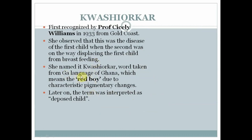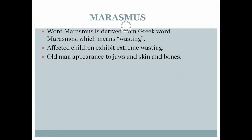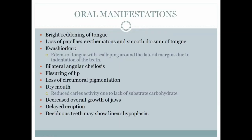Kwashiorkor is a word taken from the Twi language meaning 'red boy' due to characteristic pigmentary changes, later interpreted as 'deposed child.' It was first recognized by Professor Cecily Williams in 1933. It was the disease of the first child when the second was on the way, displacing the first from breastfeeding. Marasmus, a Greek word meaning wasting, affects children exhibiting extreme wasting and an old-man appearance in jaws, skin and bones.